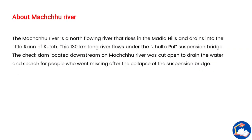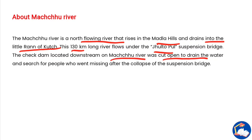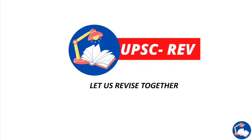The Machu River is a north-flowing river that rises in the Mandla Hills and drains into the Little Rann of Kutch. This 130-kilometer-long river flows around the Jhultopul suspension bridge that collapsed. A check dam located downstream in the Machu River was cut open to drain the water and search for people who went missing after the collapse.